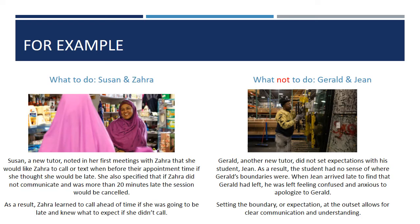Take a moment to read through these examples: one of a student-tutor pair, Susan and Zara, in which boundaries surrounding time and communication were clearly explained; and the other involving Gerald and Jean, a situation in which boundaries were never touched on and the student did not really know what to expect or do. Take a moment to review these two hypothetical scenarios.